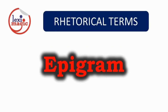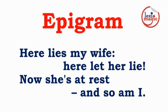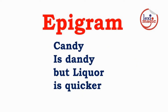An epigram is a witty, sarcastic statement with an amusing ending. From John Dryden: 'Here lies my wife and here let her lie. Now she's at rest and so am I.' And by Ogden Nash: 'Candy is dandy but liquor is quicker.'